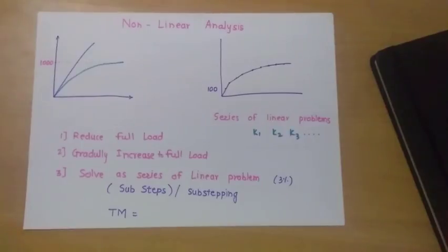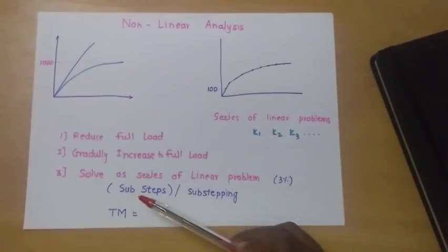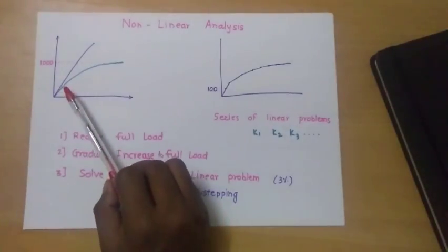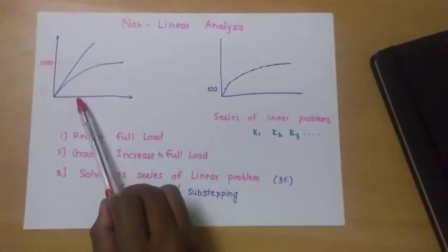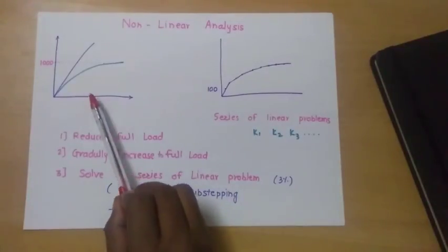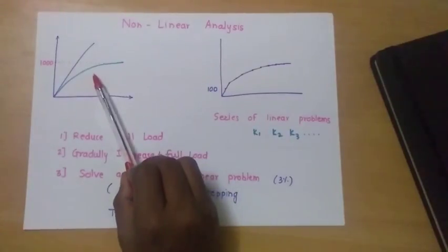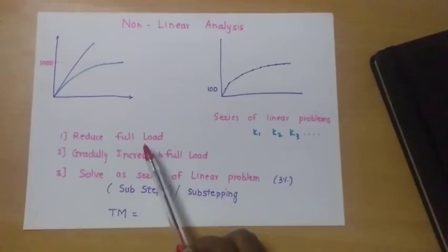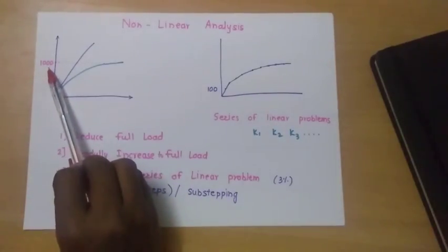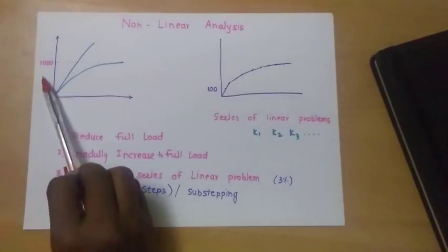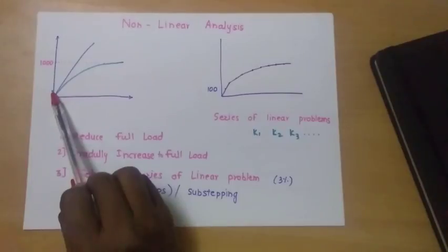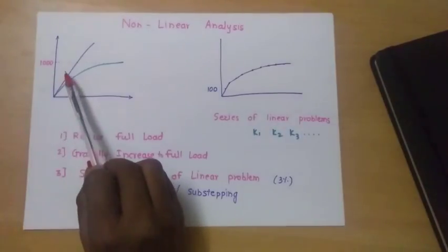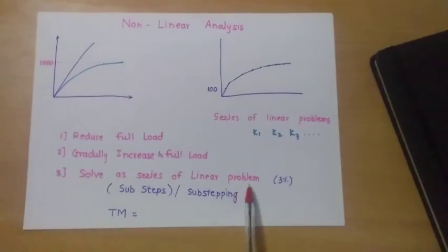Now let's see what actually happens in nonlinear analysis. Suppose we have two graphs — one linear and one nonlinear. At a load of 1000 N, we get different deformations from each. To get an accurate result, we reduce the full load into sub-steps: 100, 200, 300, and so on, gradually increasing to the full load and solving a series of linear problems.